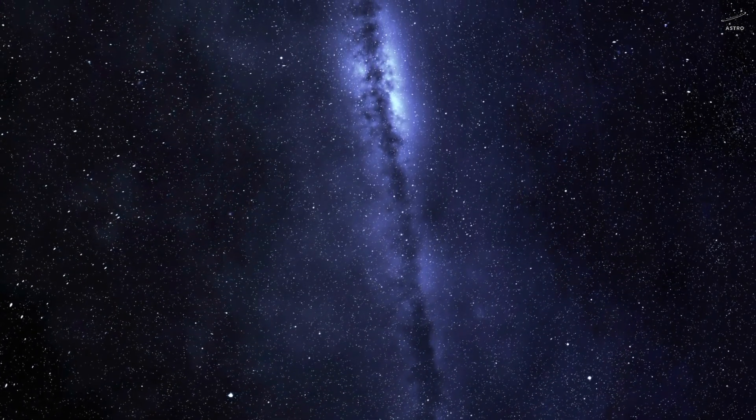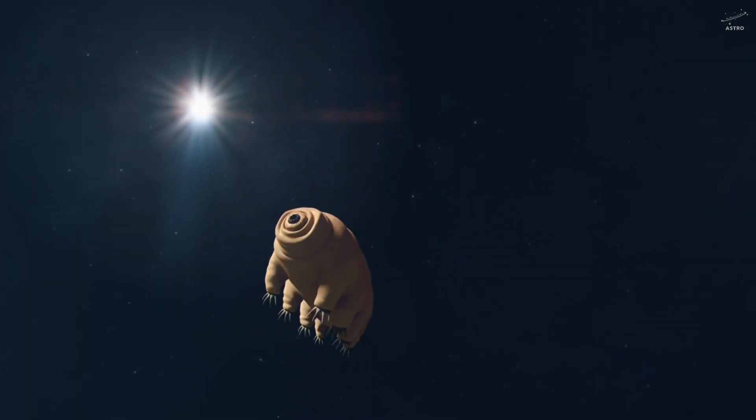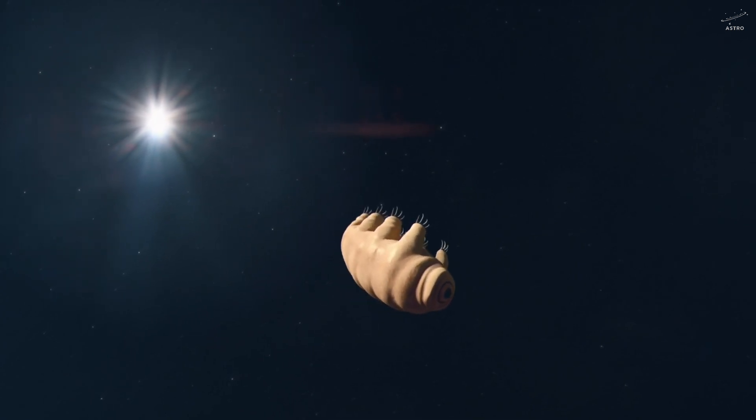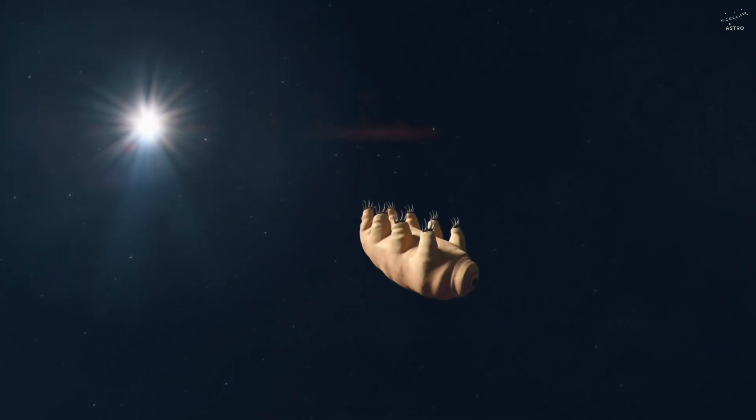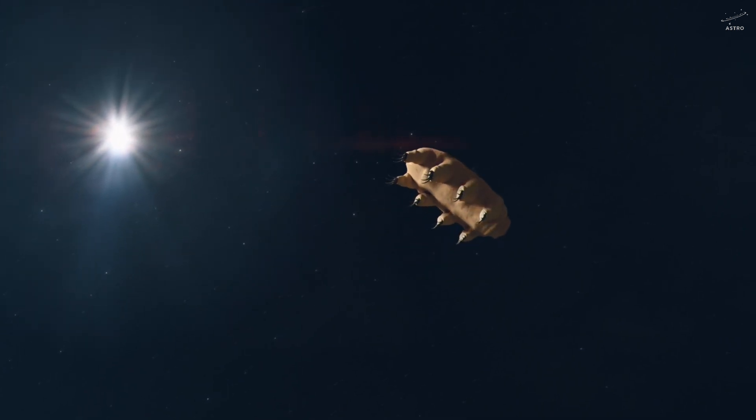There's one life form that seems almost immune. Meet the tardigrade. A tiny, round-bodied micro-animal, about half a millimeter long. It kind of looks like a wrinkled jelly bean with legs, or maybe a microscopic water bear. At first glance, it's almost cartoonish. But don't let its appearance fool you. This creature is a survival machine.